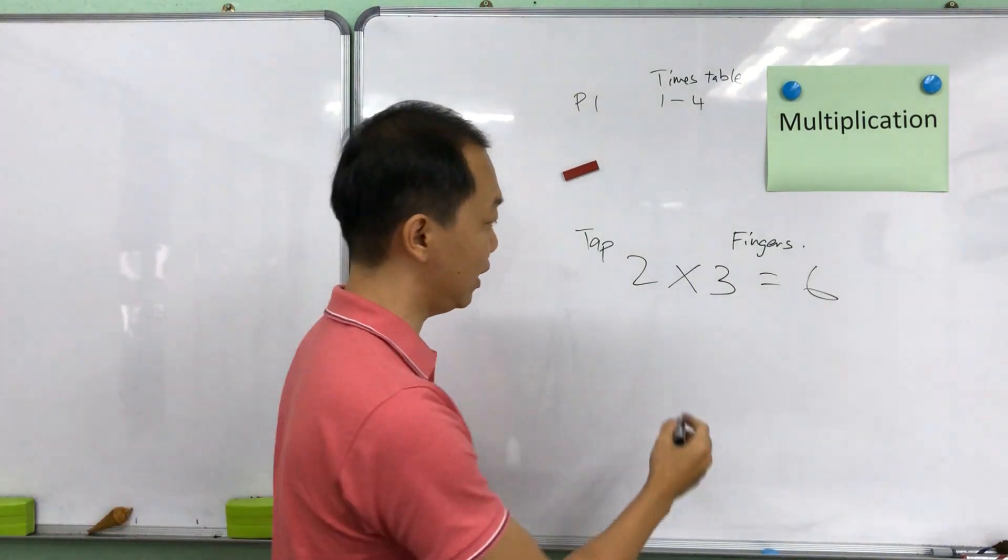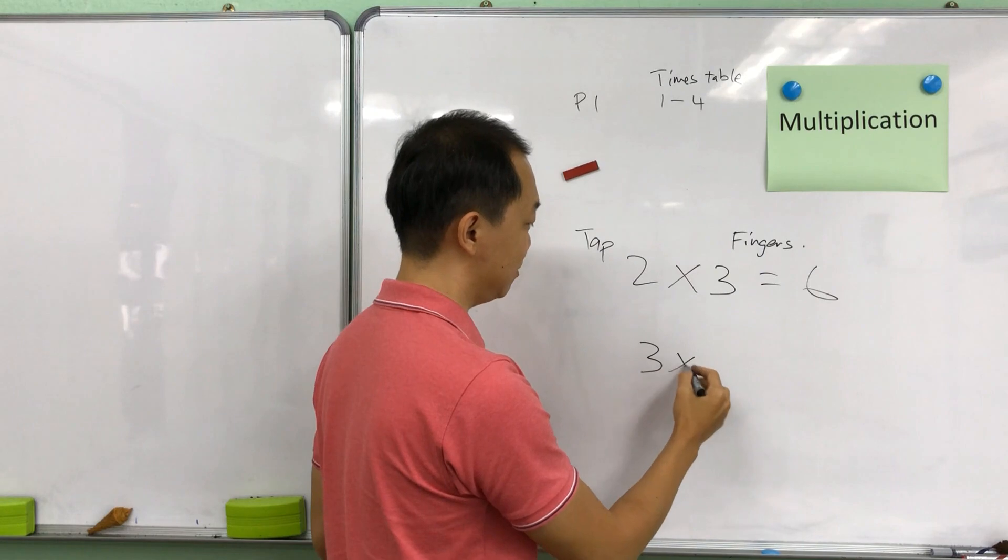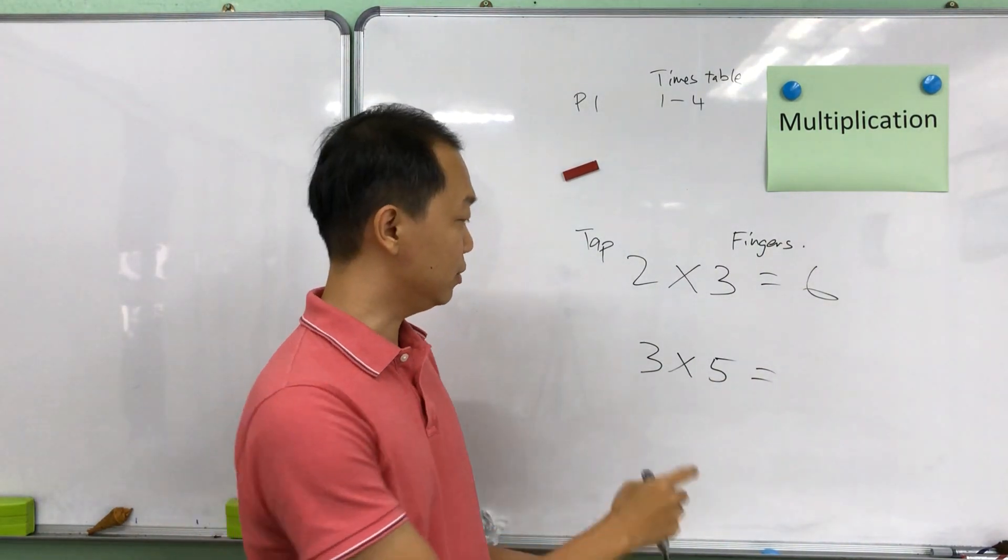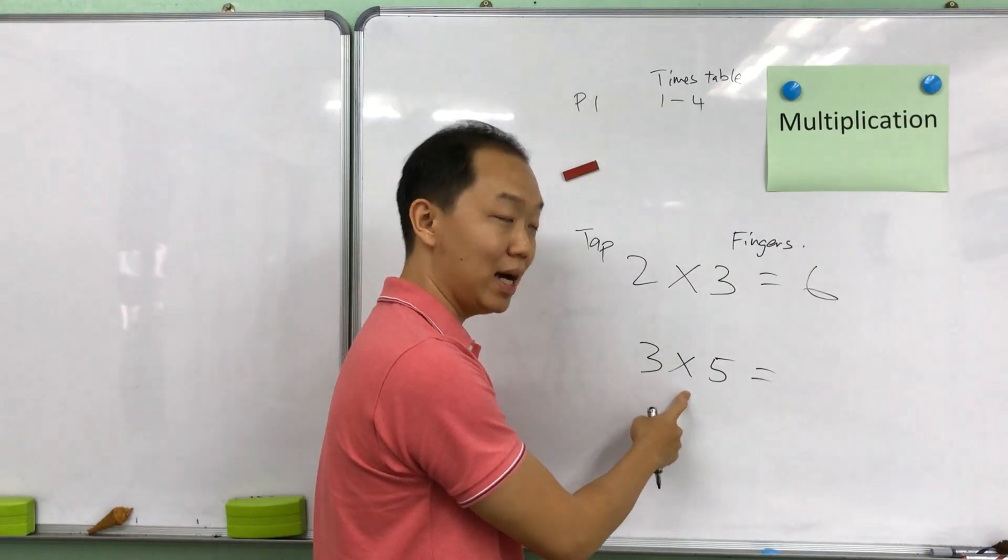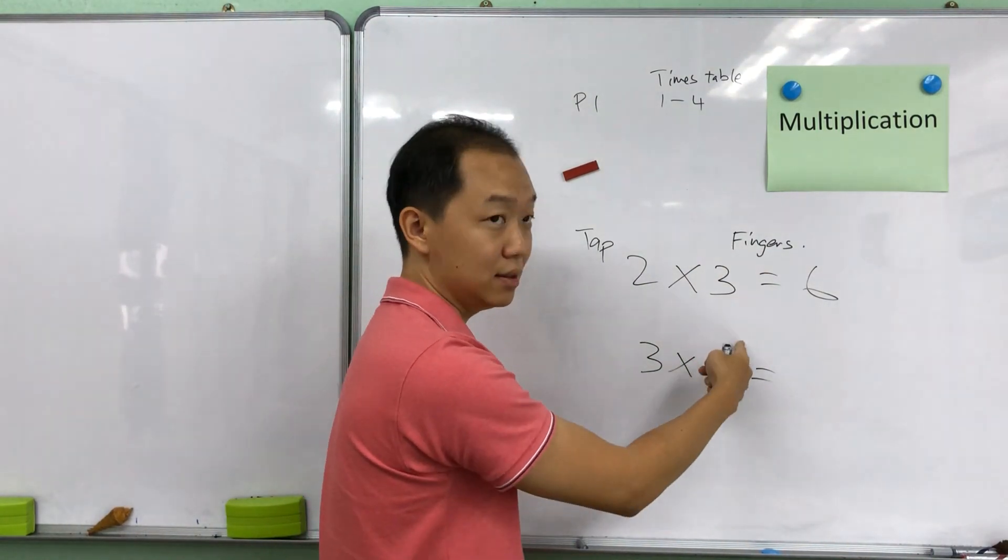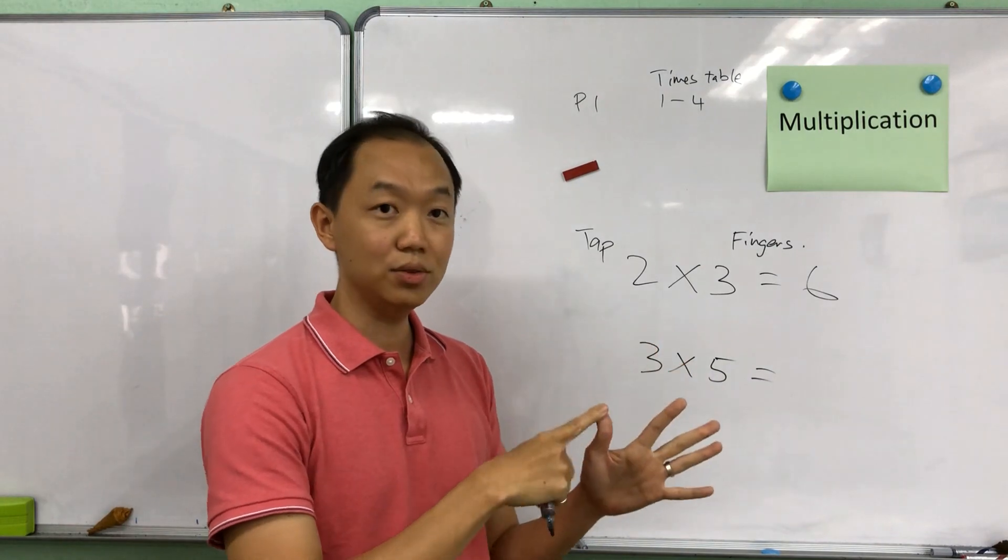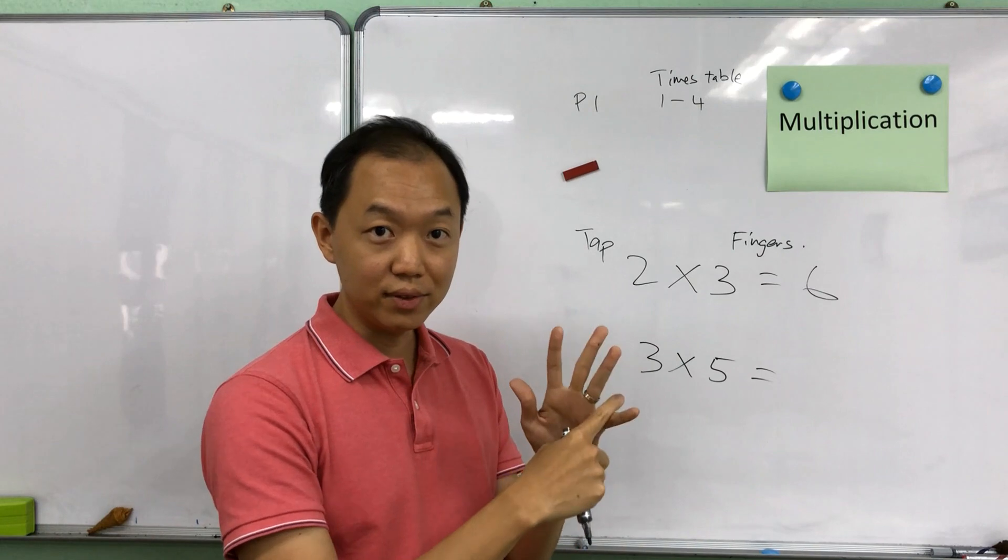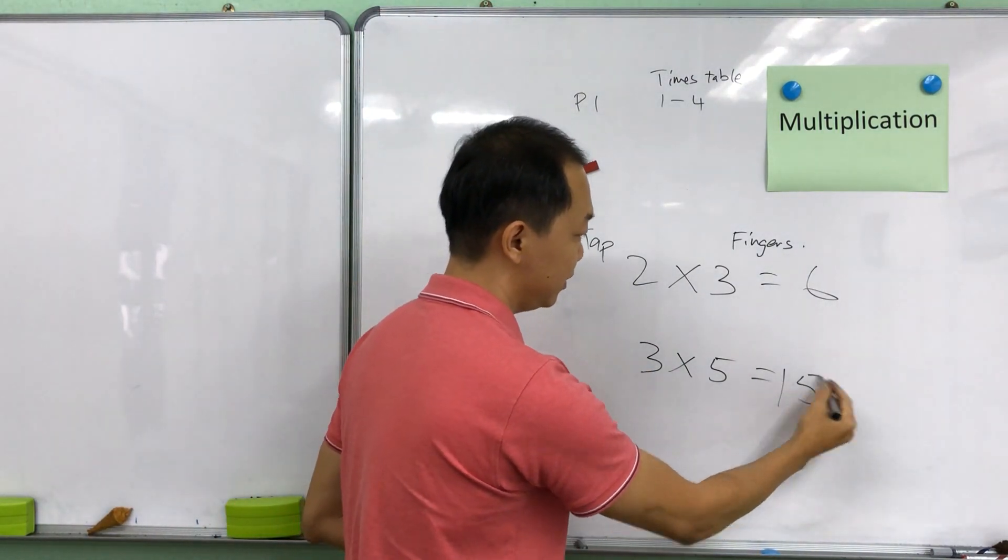So let's try another one. If I have 3 times 5, I want to find out what is the answer for 3 times 5. So tap 3 times on 5 fingers. So 1, 2, 3, 4, 5, 6, 7, 8, 9, 10, 11, 12, 13, 14, 15. So the answer is 15.